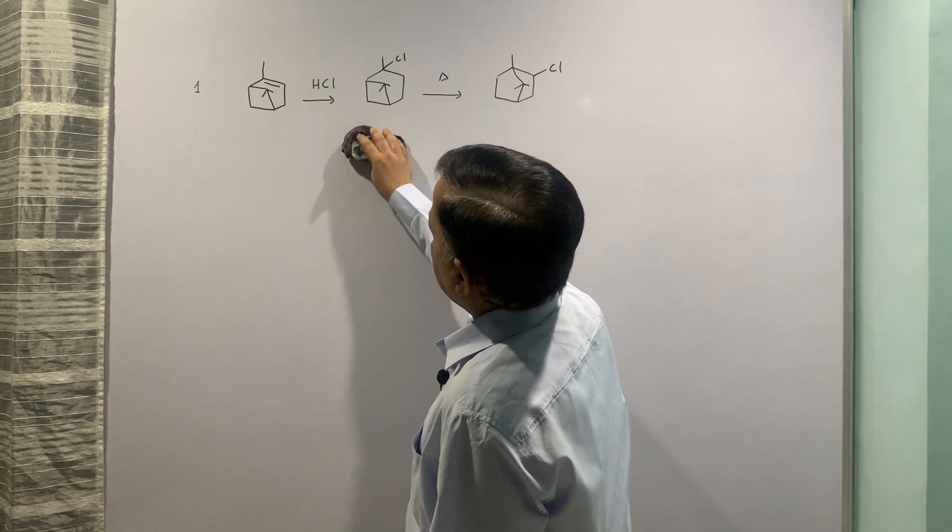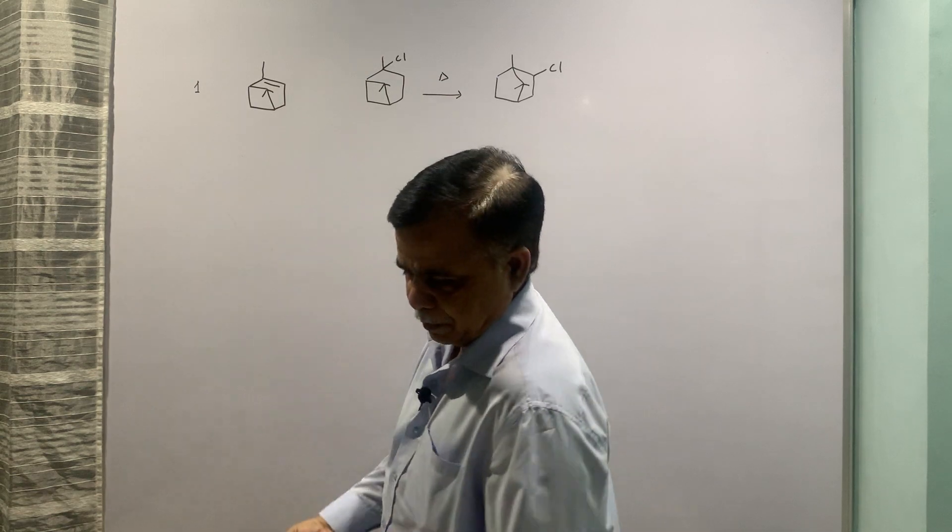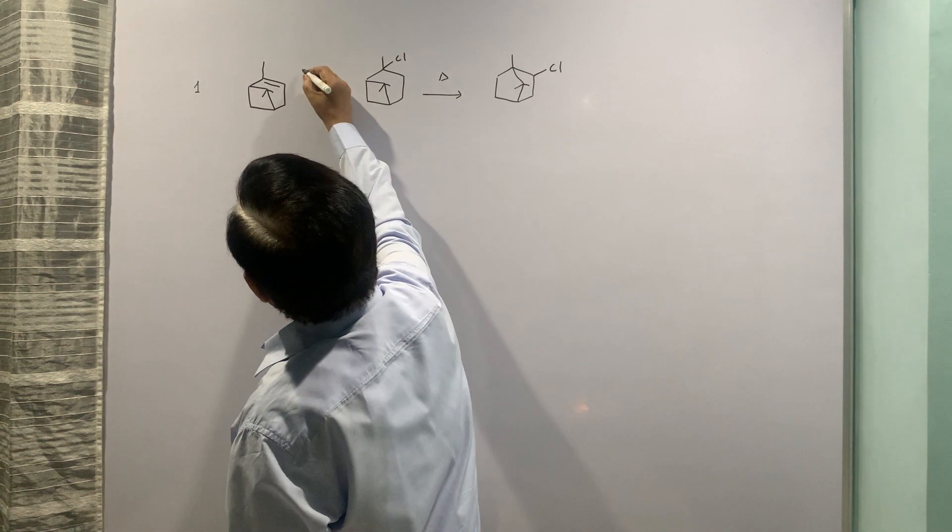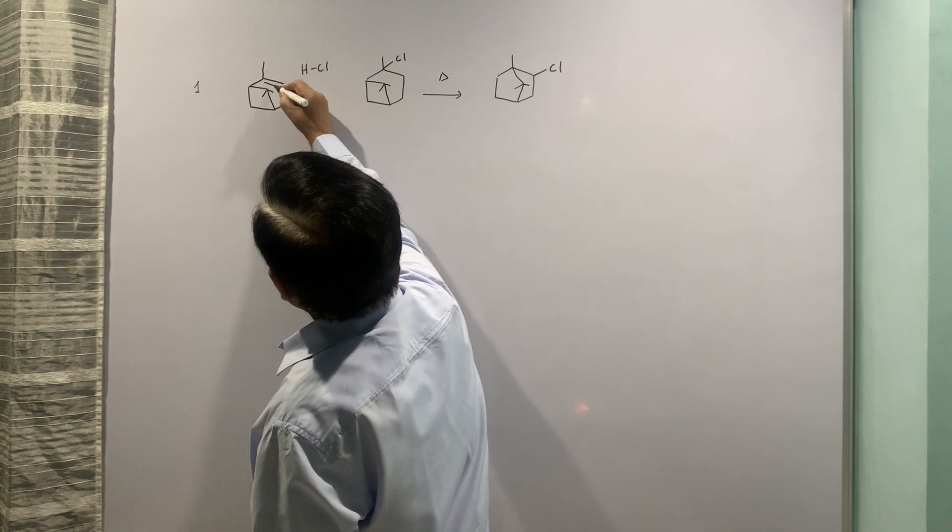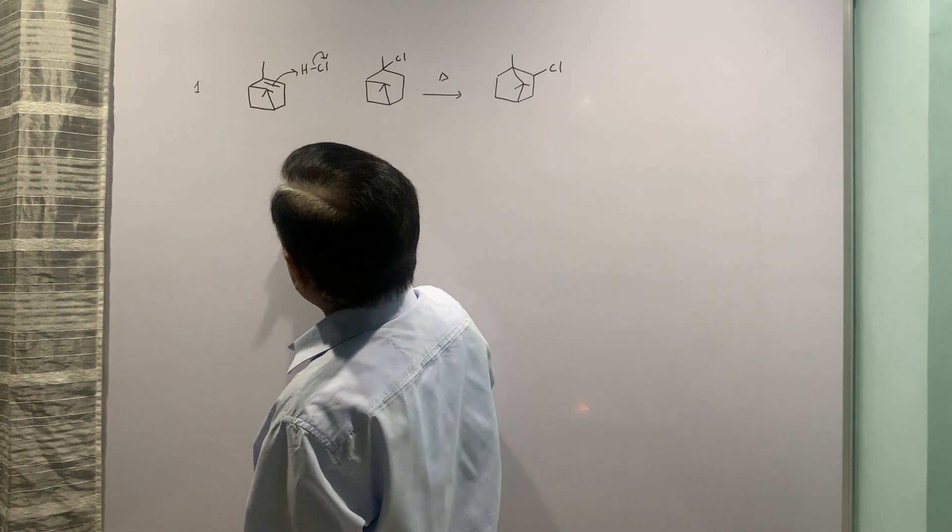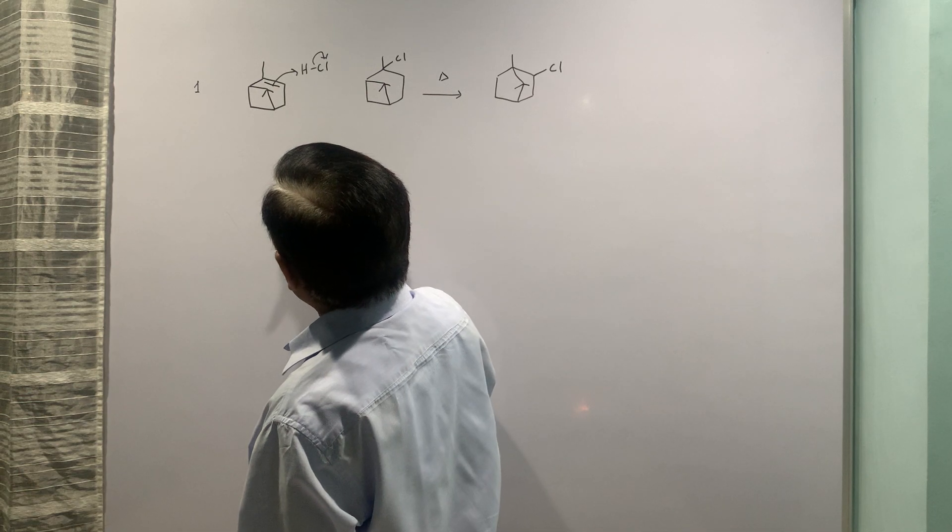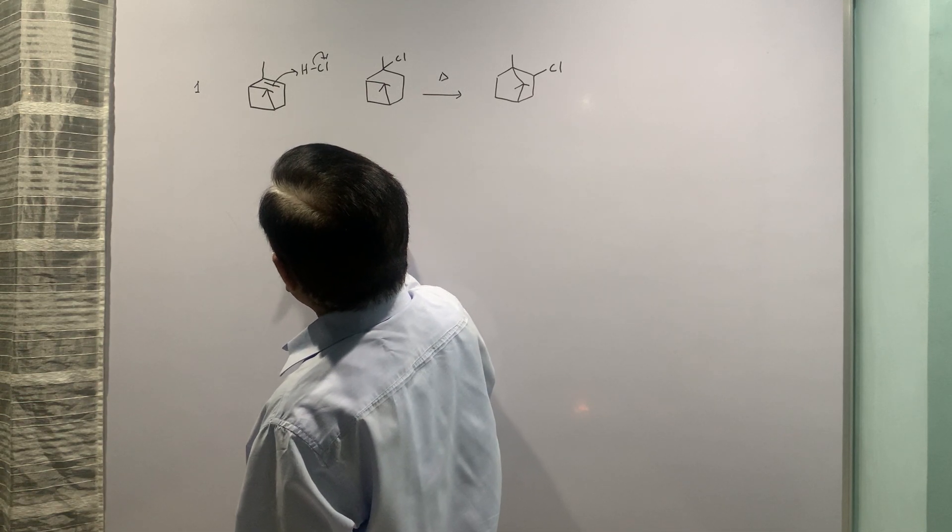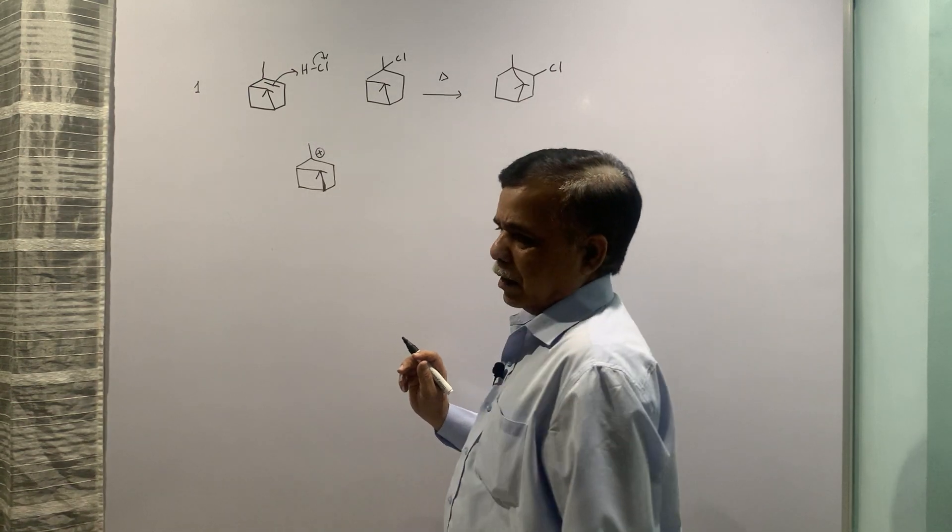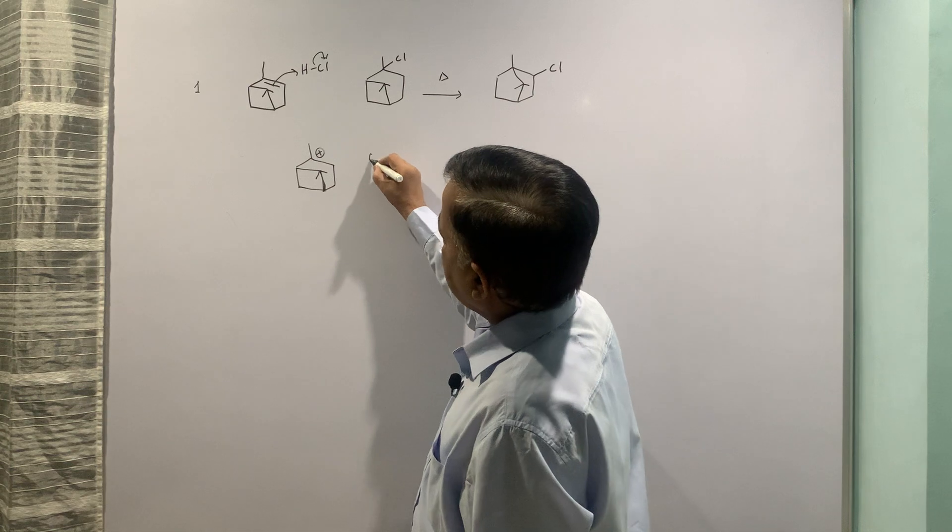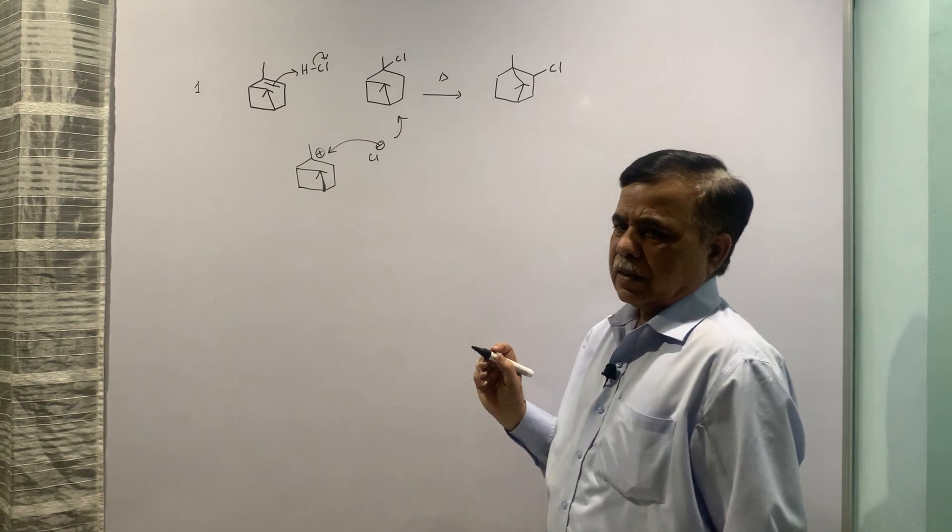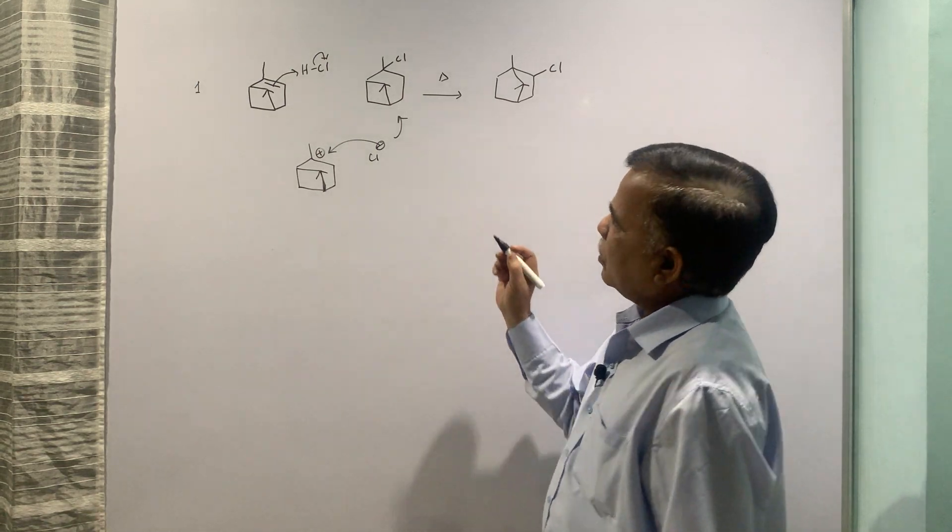For the first one, let me clear this and write the step. This will be H and Cl. The pi bond attacks at electron deficient center and as a consequence of this you will be having the more stable carbonium ion and then Cl- will attack here.